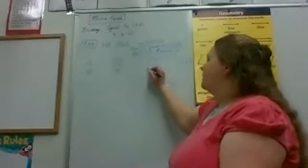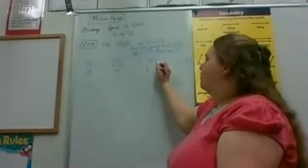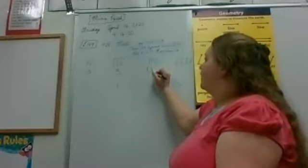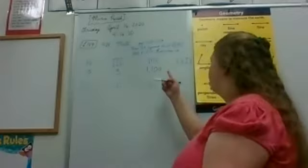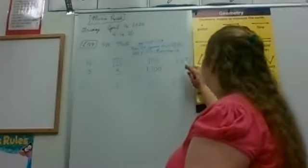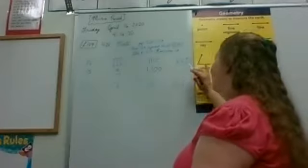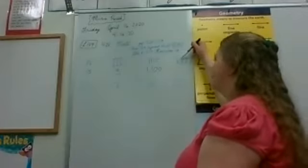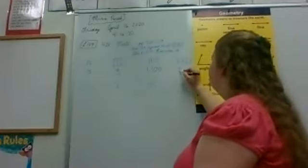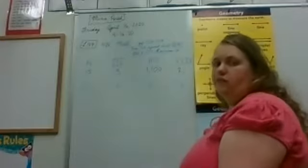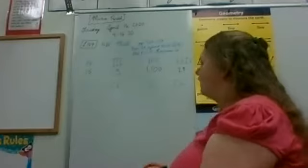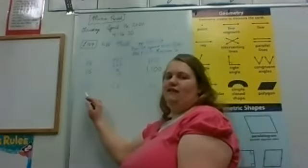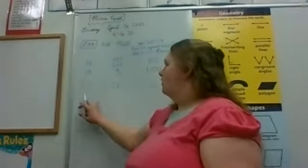M is 1,000 and C is 100. We don't have anything after it, so we just put our zeros — that gives us 1,100. Here we've got XXIX: two X's which is 20, and IX is 1 before X, which gives us 9, so the total is 29. Good job.